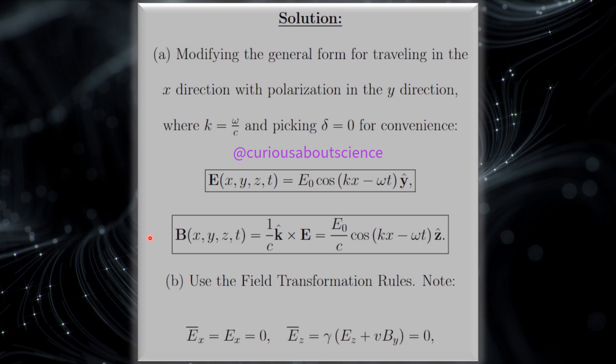We also showed how B was equal to 1 over C, k hat cross E. So, propagation direction, k hat. So we had x cross y gets a z. So everything there, refined, polarization direction changes, they're mutually orthogonal, everything looks good.